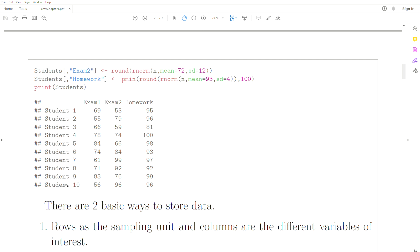So in this case, student, and the columns are the different variables of interest or the responses. And that's the way this object is stored.